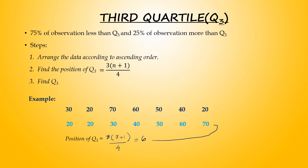Look at the data arrangement. Observation number 6 is 60. Therefore, Q3 equals 60. Back to the basic concept of Q3: 75% of observations are less than 60, and the other 25% is more than 60.